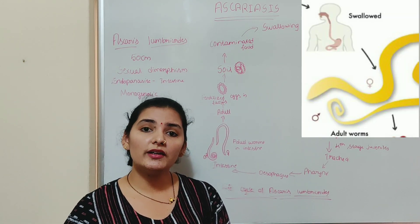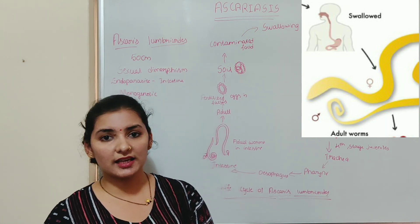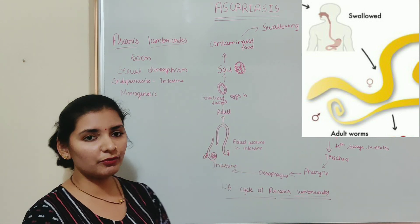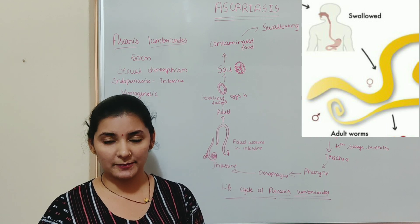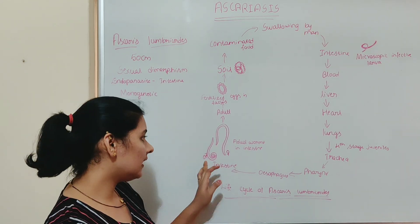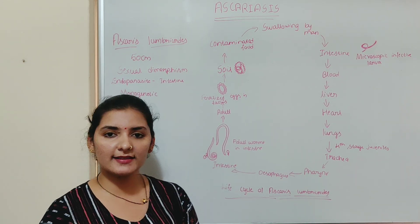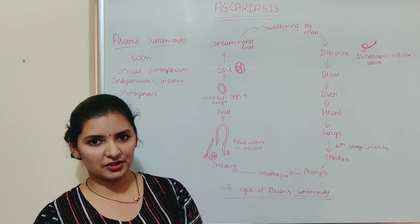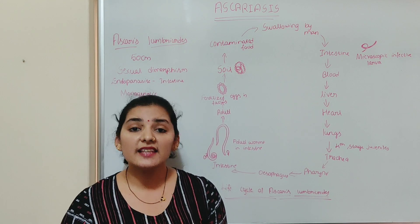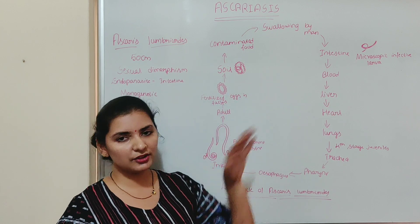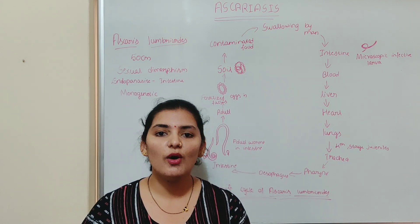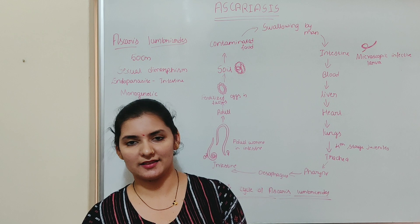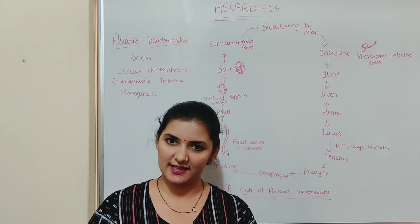Once the larva reaches the intestine for the second time, it develops into male or female Ascaris lumbricoides. In the intestine, the male and female Ascaris lumbricoides mate again to form eggs of the next generation, and the cycle repeats to infect new individuals. That is how Ascaris lumbricoides lives in the human intestine and causes Ascariasis.